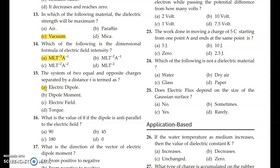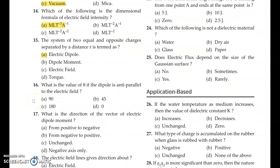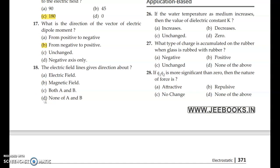The system of two equal and opposite charges separated by a distance R is termed as electric dipole. Question 16: What is the value of theta if the dipole is anti-parallel to the electric field? Answer is option C. What is the direction of the vector of electric dipole moment? Answer is option B, from negative to positive. The electric field lines give direction of electric field.